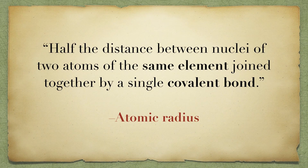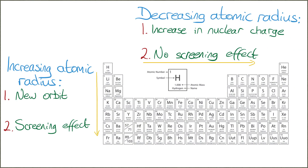The atomic radius is defined as half the distance between the nuclei of two atoms of the same element joined together by a single covalent bond. The more orbits, or energy levels as they are also called, the bigger the atom.